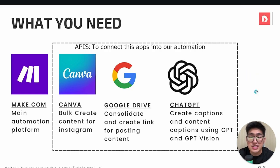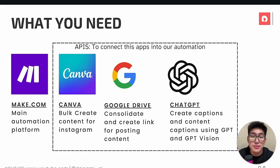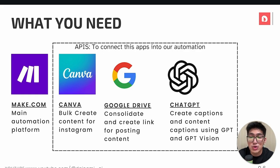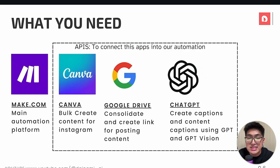So what do we actually need for this specific workflow? Firstly, we definitely need Make, which is our main automation platform, allowing us to create custom automations. Within Make itself, we'll be connecting to three simple applications. Firstly, Canva to bulk create content and designs for our specific posts. Following that, we'll also be connecting it to Google Drive, where we'll consolidate all our generated content and create a link for posting onto social media. Last but not least, the brain behind our automation workflow is ChatGPT, where we'll create captions and content using GPT and GPT Vision.